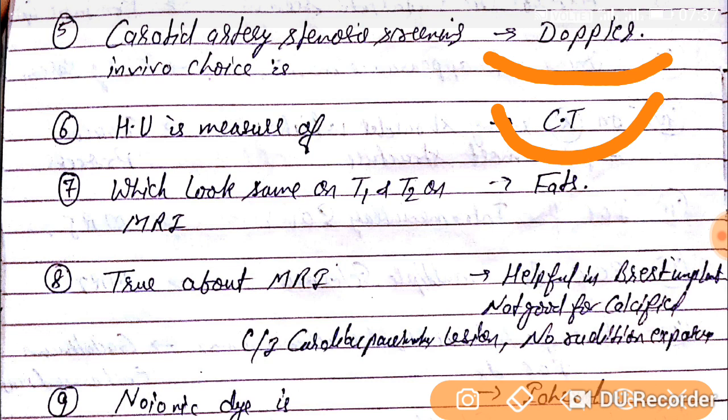Question number seventh. Which tissue looks the same on T1 and T2 on MRI? This is fat — fat looks the same on T1 and T2.